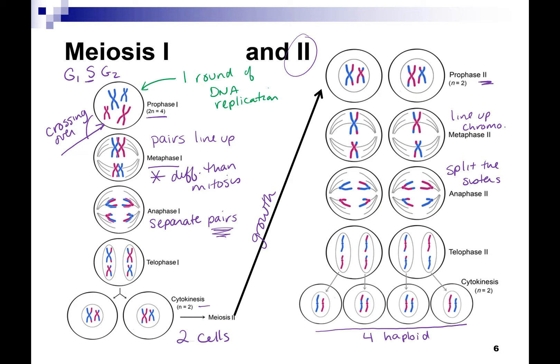Don't worry, we're going to draw all of this. The other big key is that the pairs line up and you separate the pairs in meiosis I — unique to meiosis.